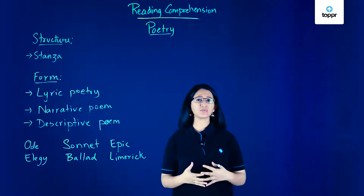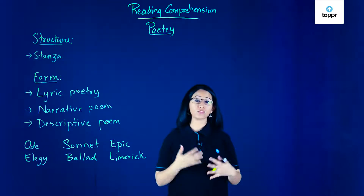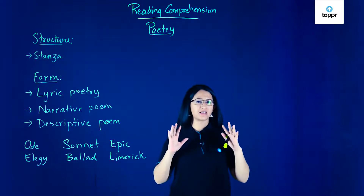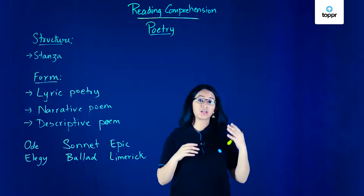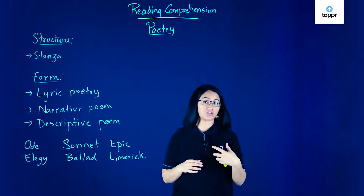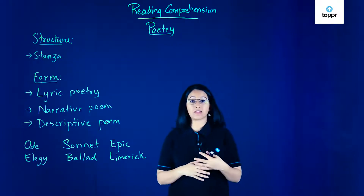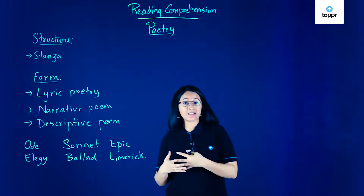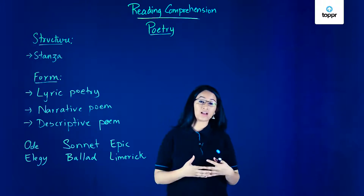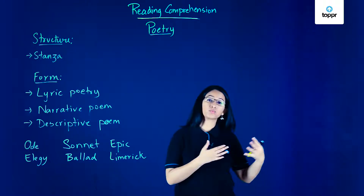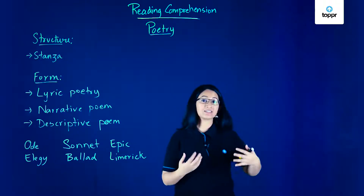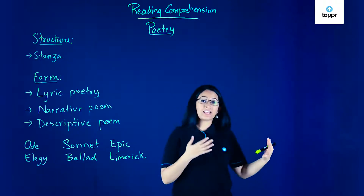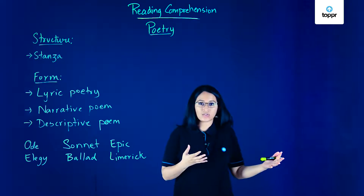So whenever you see a poem, what's the first thing that you notice? The structure. All poems have a particular structure. They might be made of three lines in every stanza, four lines, or groups of five lines, or even seven, eight, or nine lines all at once.